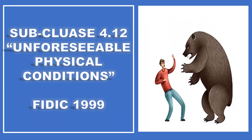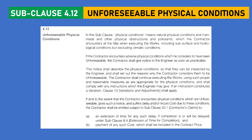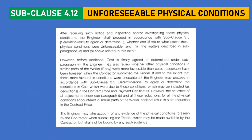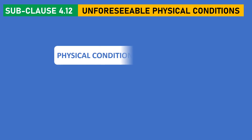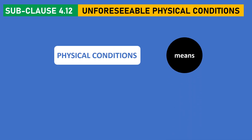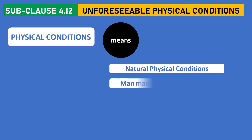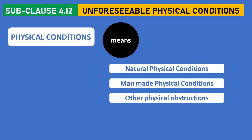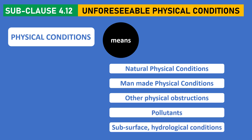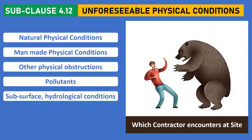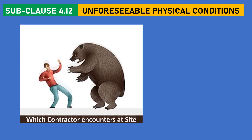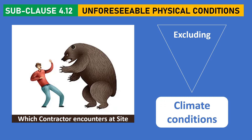Subclause 4.12 - Unforeseeable Physical Conditions in FIDIC 1999 Edition. This subclause provides the definition of physical conditions, which means natural physical conditions, man-made physical conditions, other physical obstructions, pollutants, subsurface and hydrological conditions which the contractor may encounter at site, excluding climate conditions.